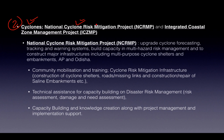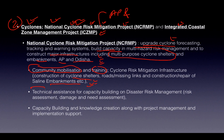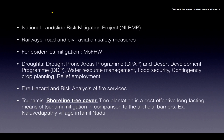For cyclones, there are two key initiatives: the National Cyclone Risk Mitigation Project (NCRMP), active in Andhra Pradesh and Odisha, and the Integrated Coastal Zone Management Project. NCRMP upgrades cyclone forecasting, tracking, and warning systems; builds capacity; and constructs infrastructure including multi-purpose cyclone shelters and embankments. Key features include community mobilization, training, cyclone shelters, embankment repair, technical assistance, and capacity building.